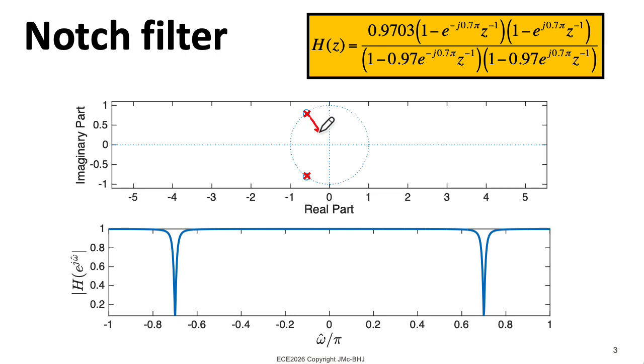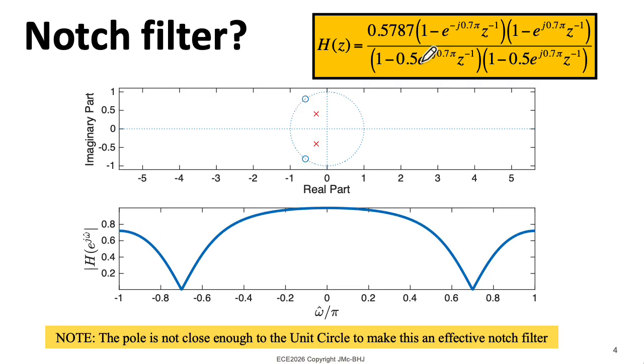Now let's see what happens if we bring the poles closer to the origin and drop the magnitude of the poles from 0.97 to 0.5. And we've also updated this normalization constant to give unity gain at DC. So here we see that the notches are much wider, although they're not as wide as they would be if the poles were eliminated entirely.